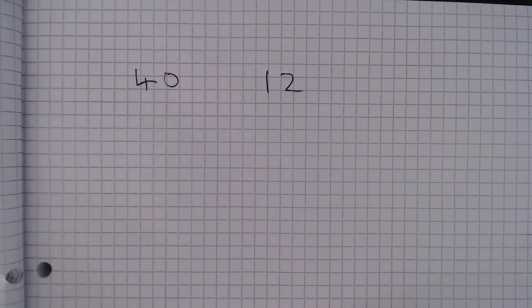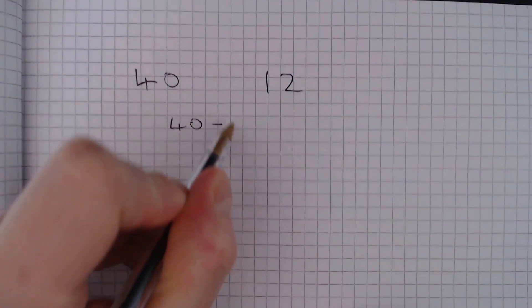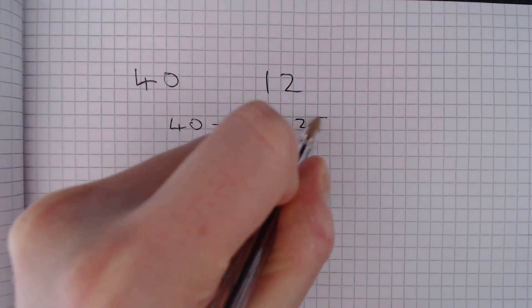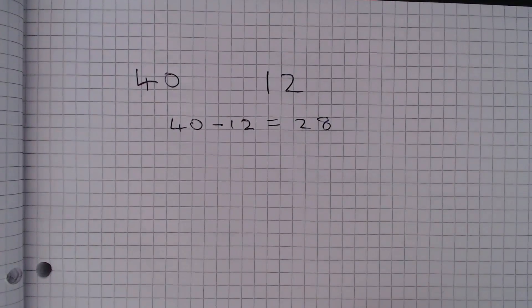Well, if 12 chocolates are made from white chocolate, then of course 40 minus 12, which equals 28 of the chocolates, are not made from white chocolate.